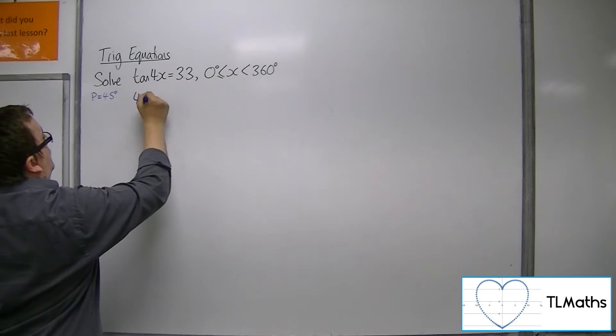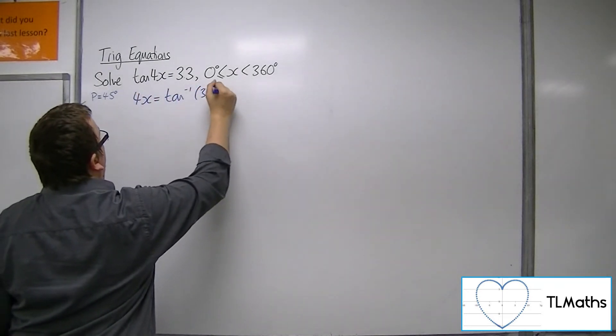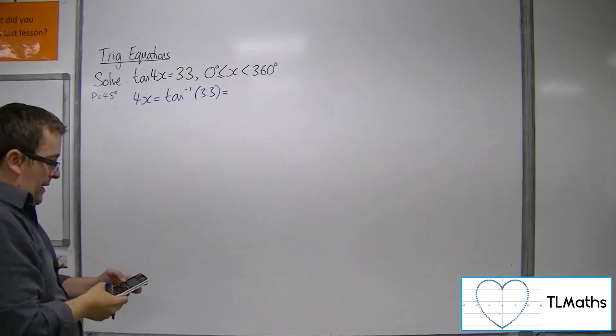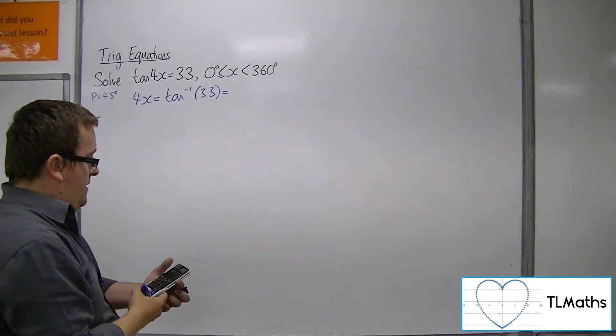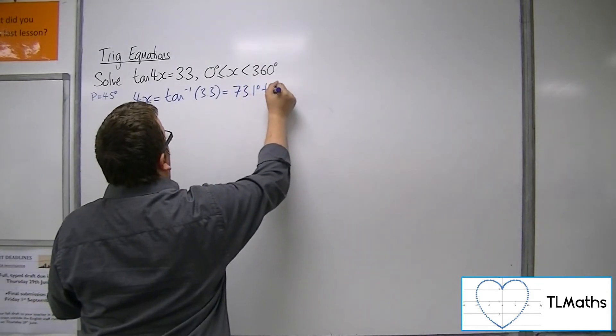So inverse tan both sides. Inverse tan of 3.3 is 73.1 degrees to 3 sig fig.